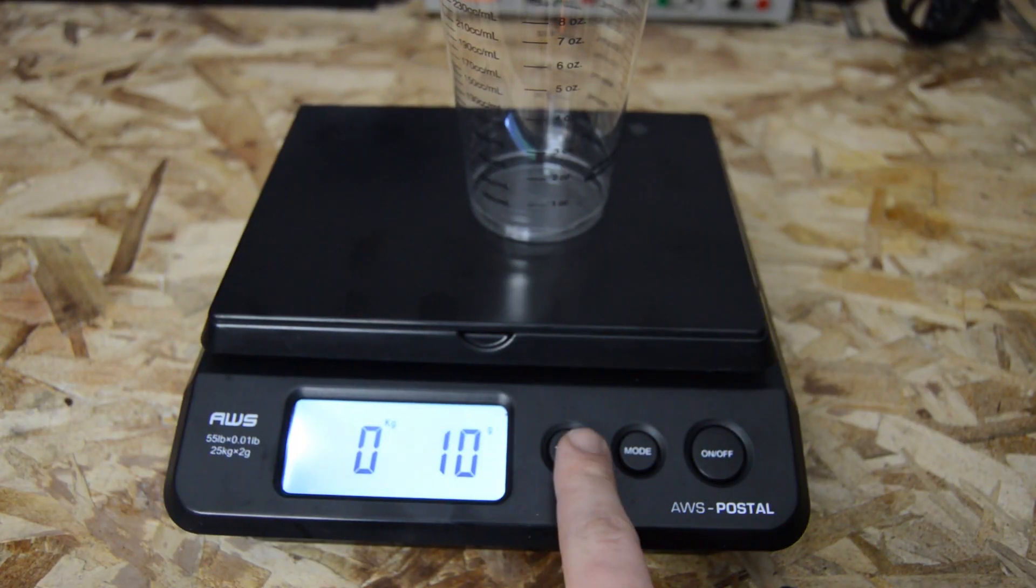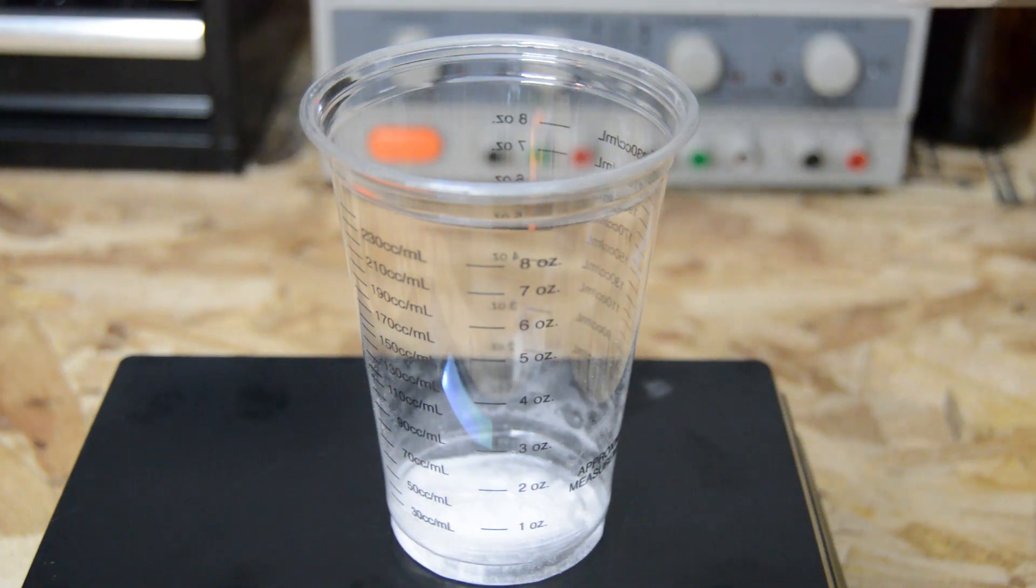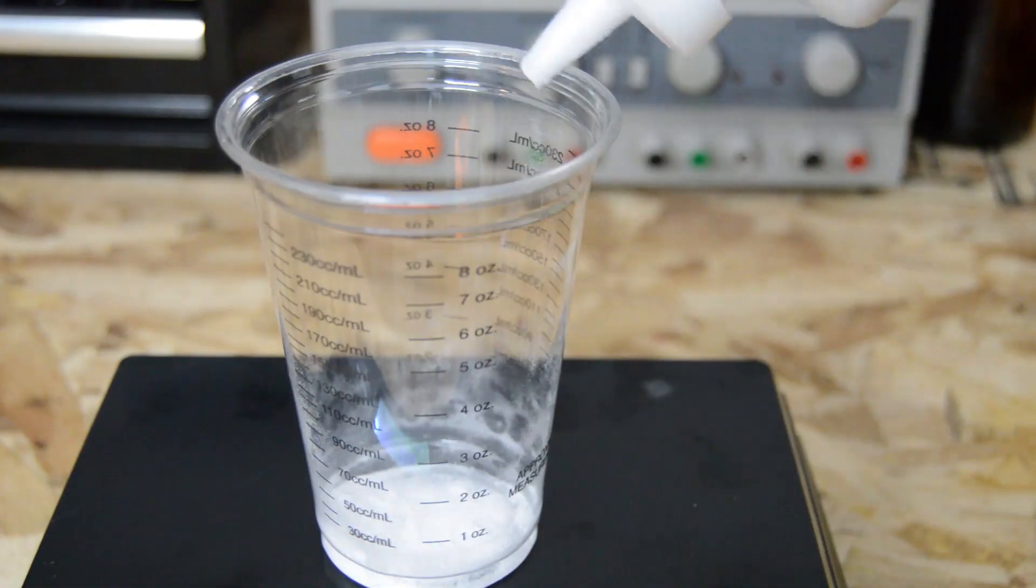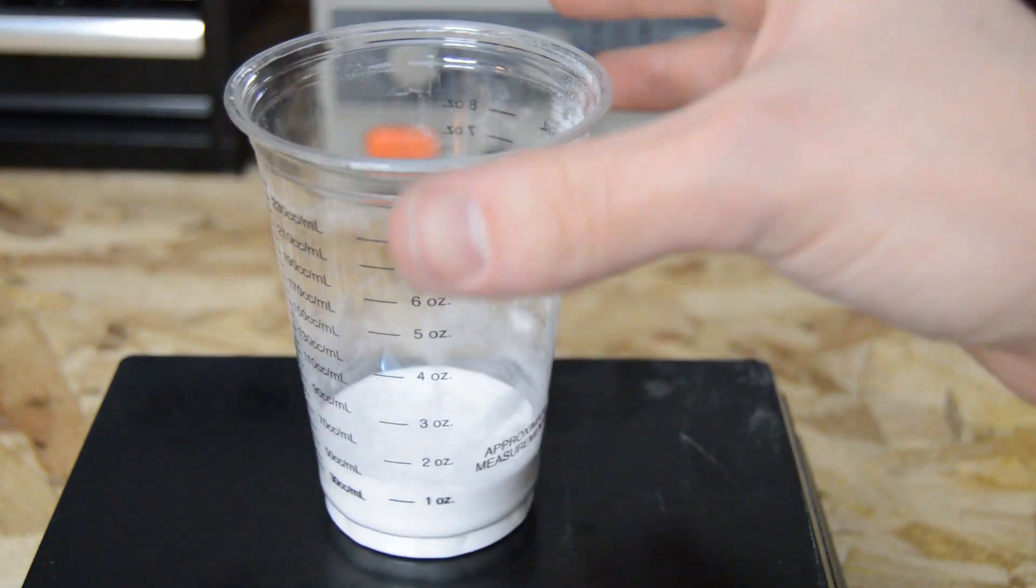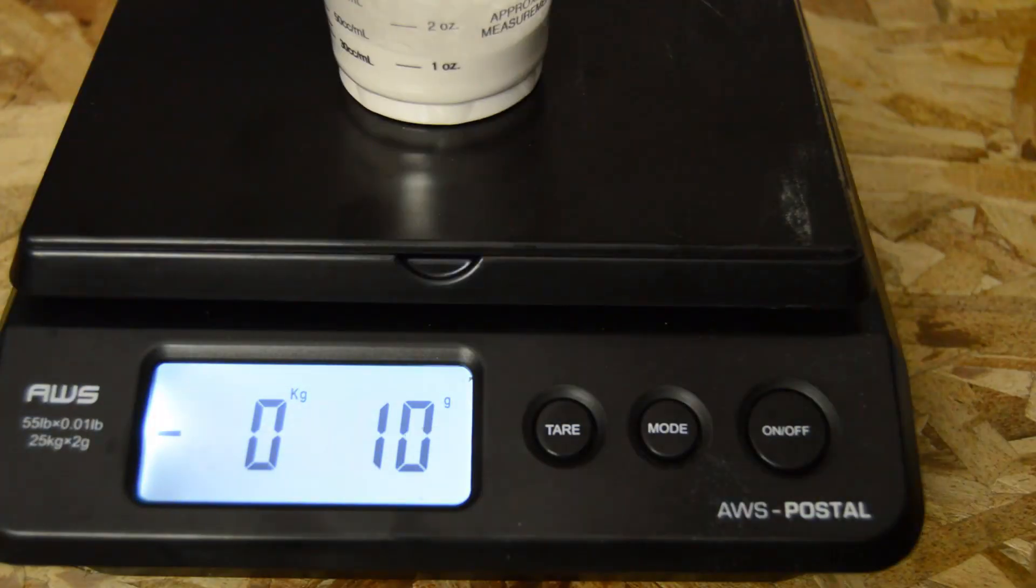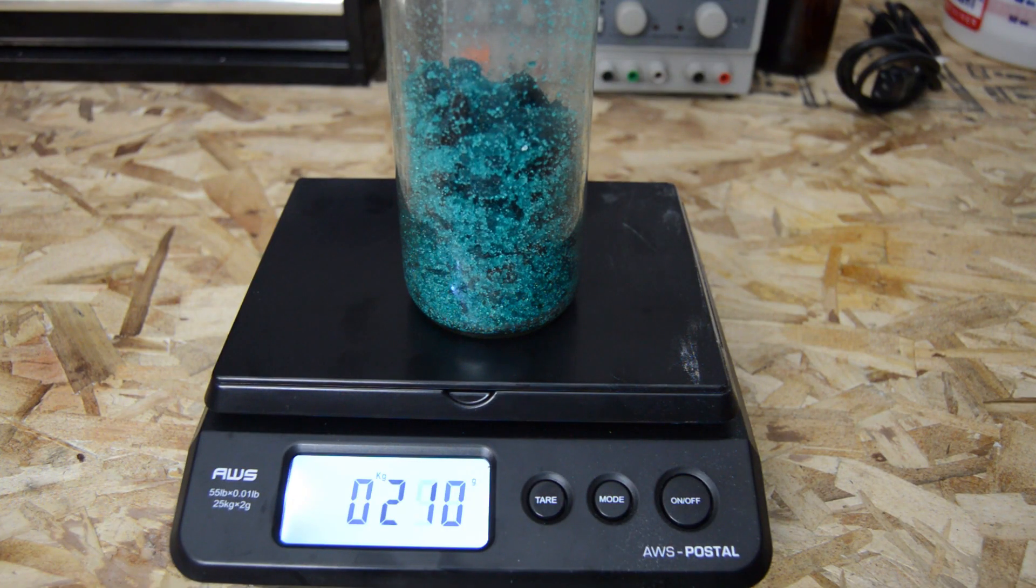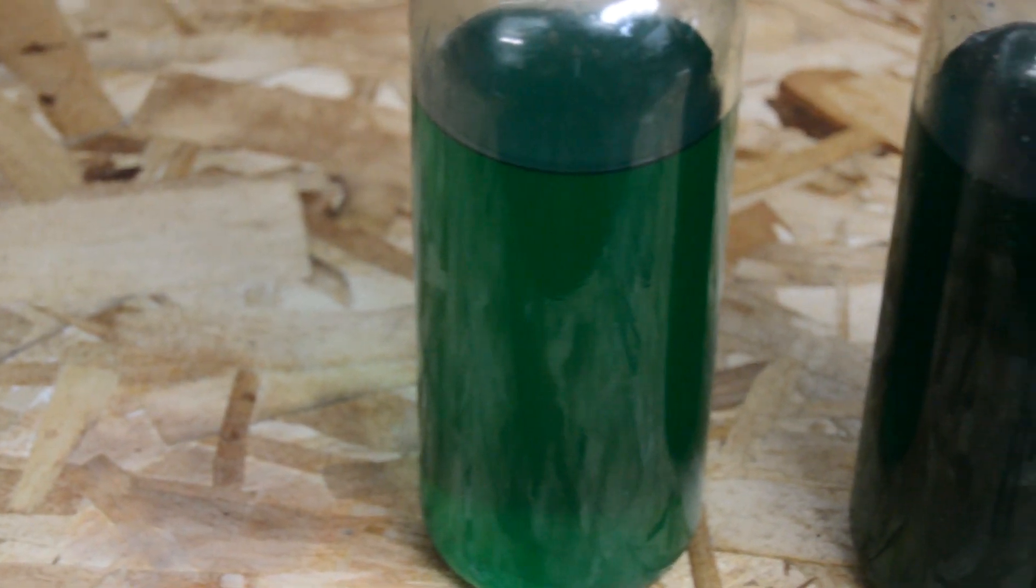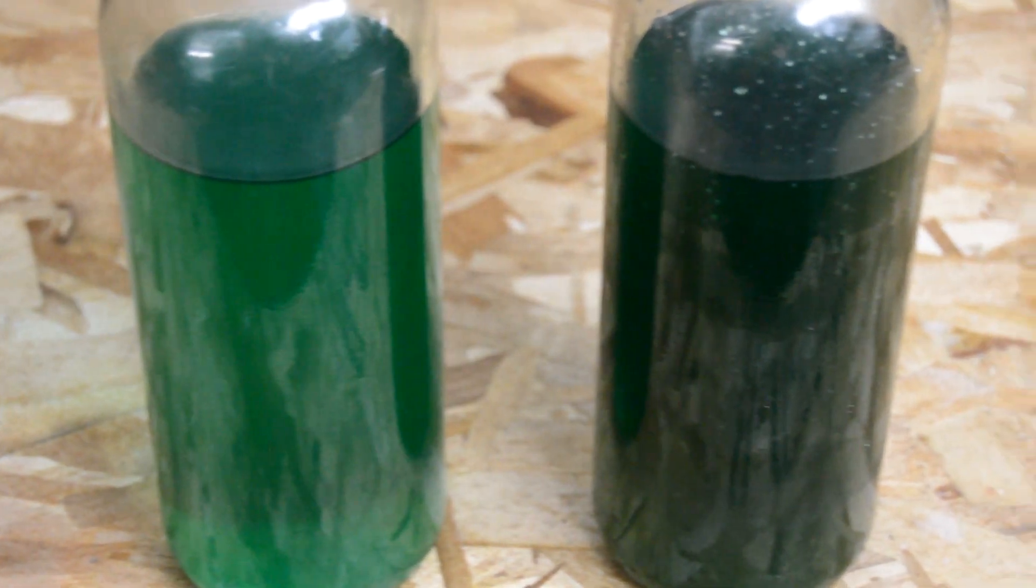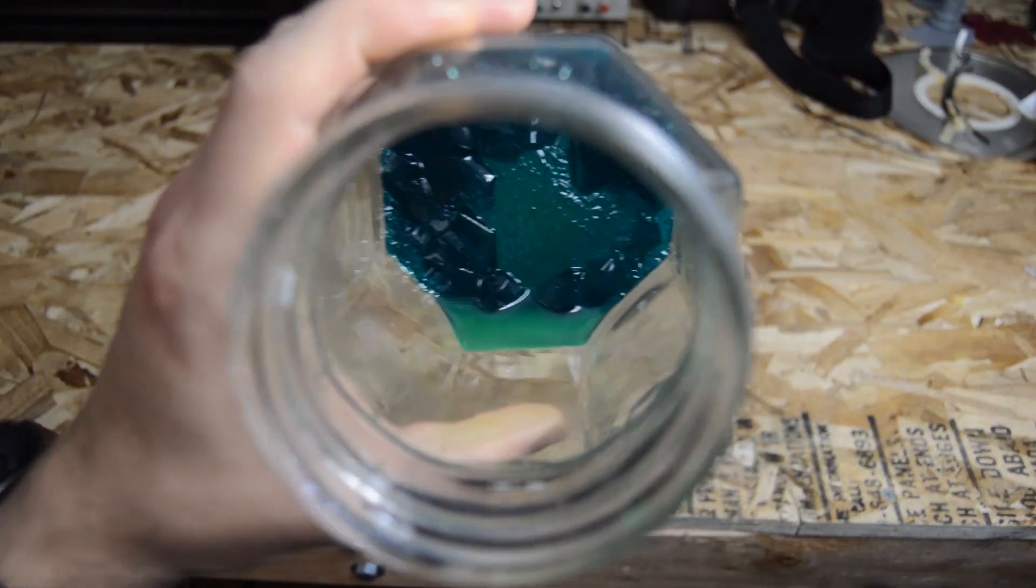Next, zero out your scale with an empty measuring cup and begin measuring the different chemicals. This solution calls for 1.1 grams per ounce of boric acid, so I added about 26 grams. From one of my previous videos on making nickel sulfate, I was able to produce a little over 300 grams of it. I made this from a simple chemical reaction with solid nickel and was able to grow relatively large crystals of nickel sulfate.